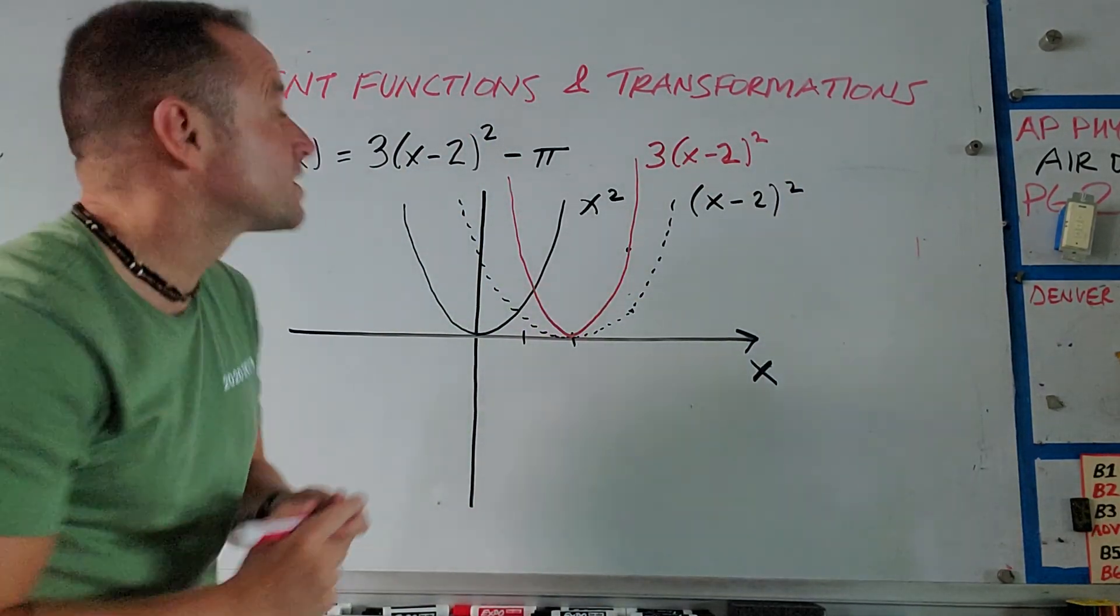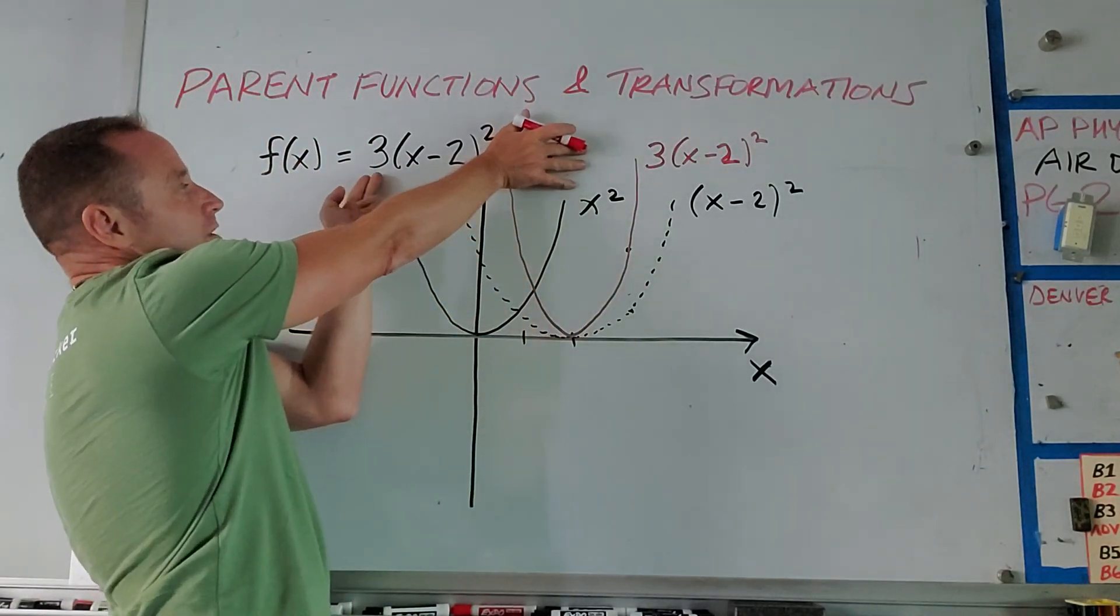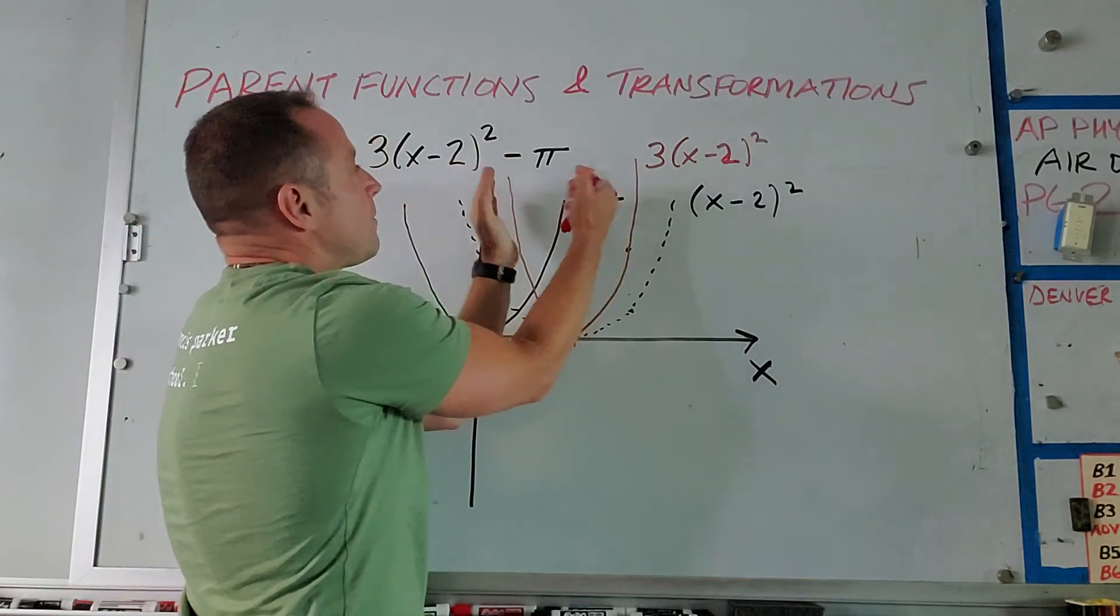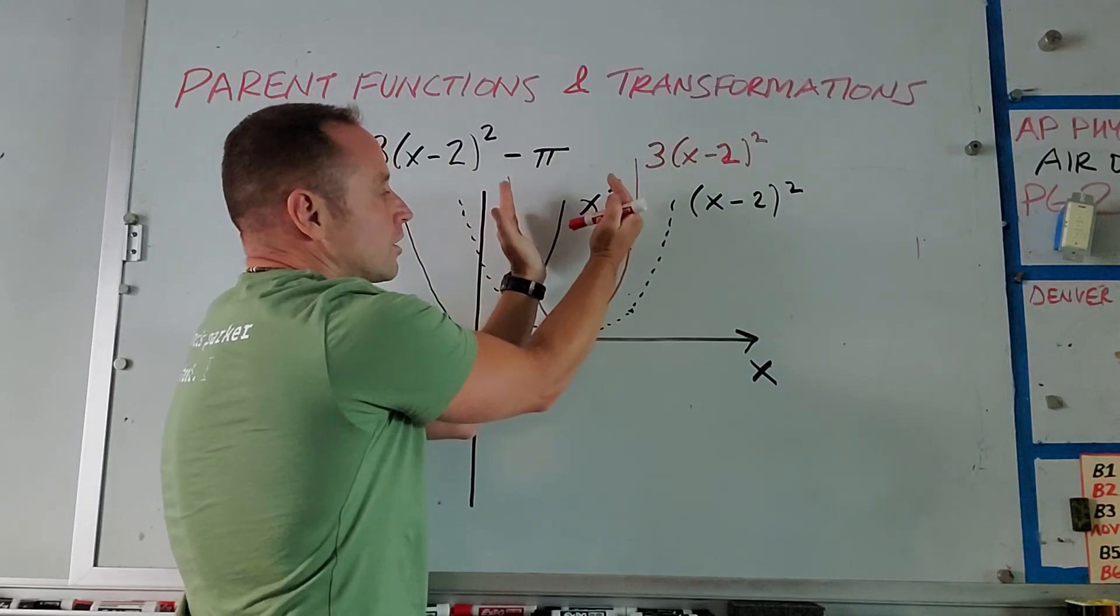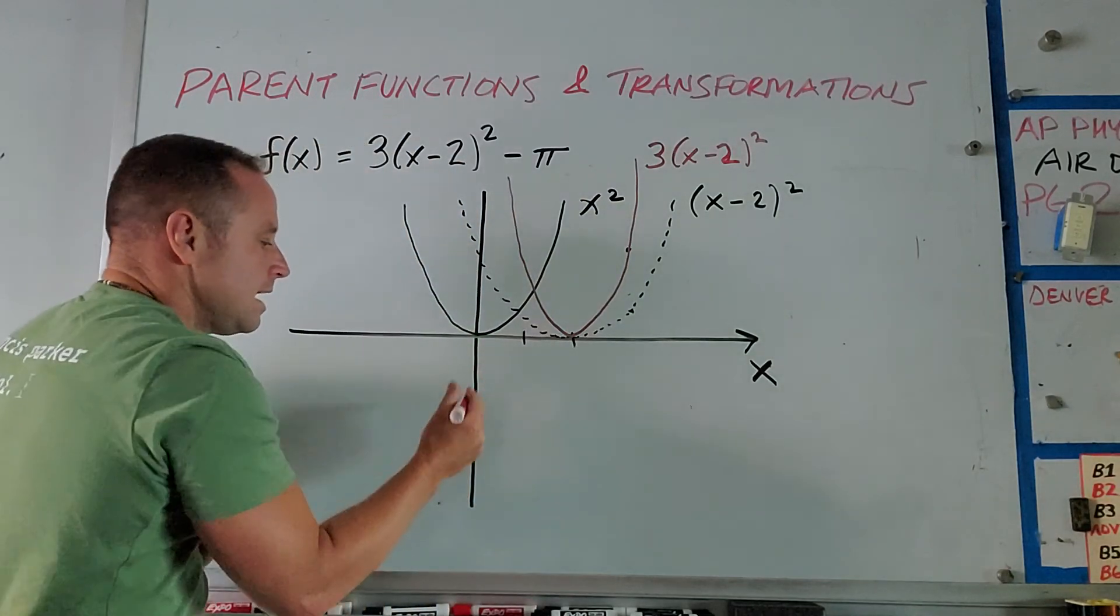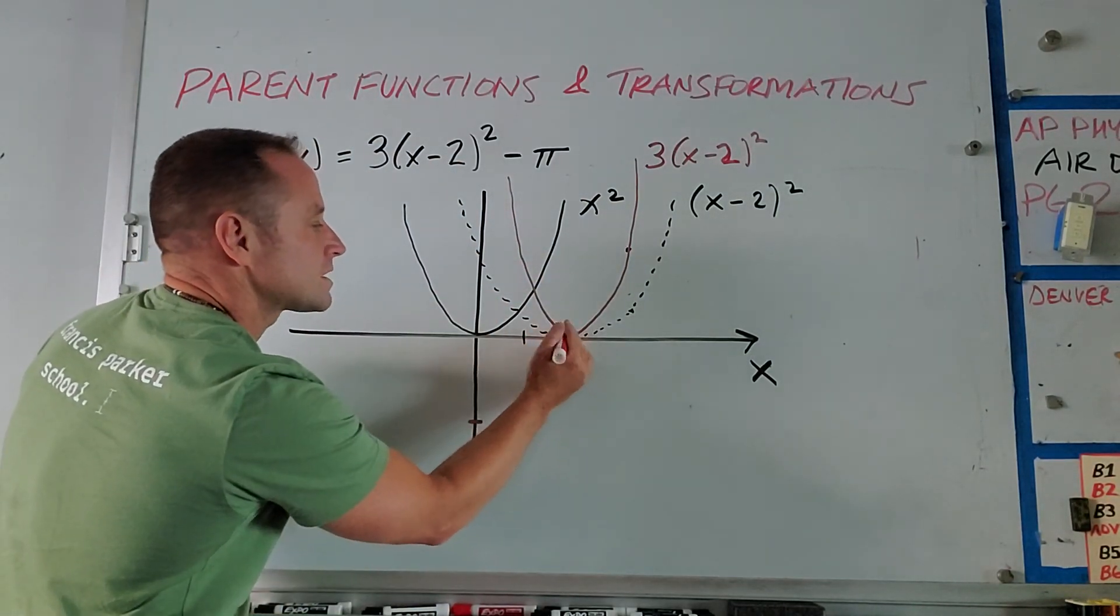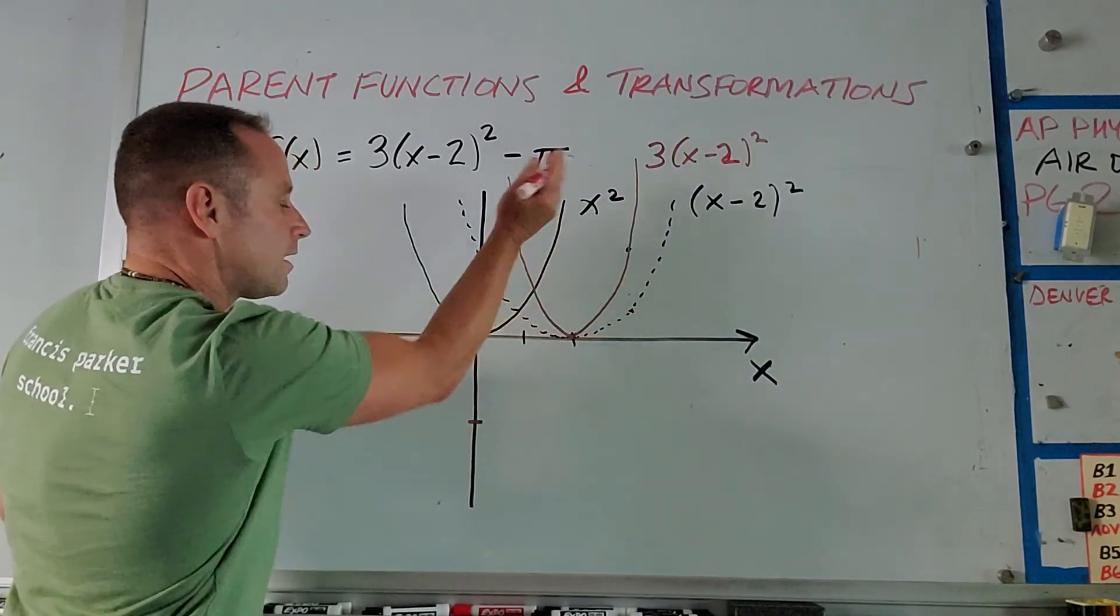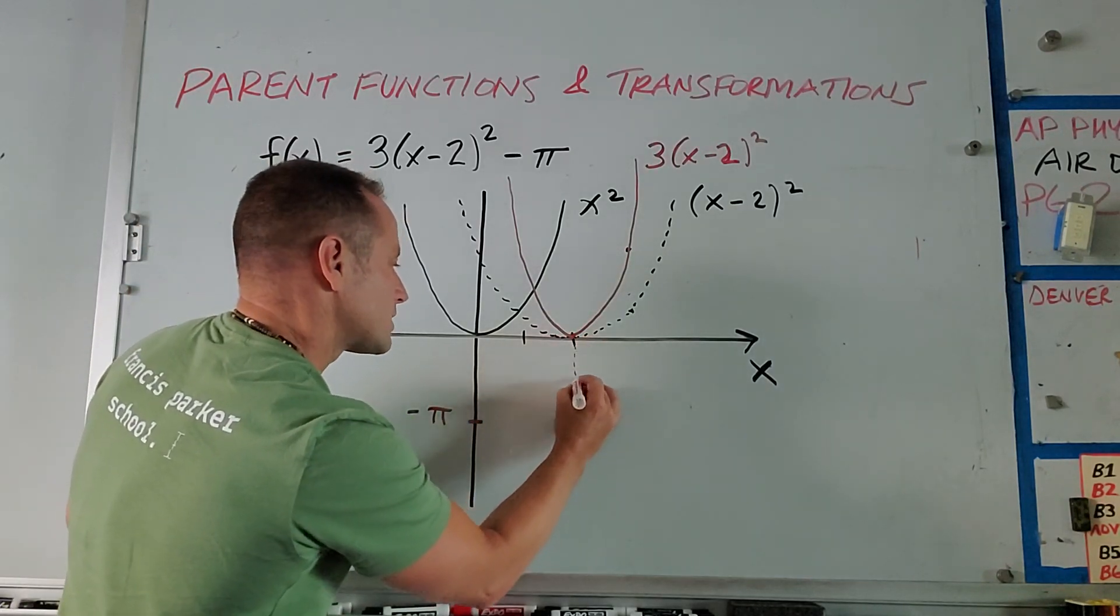So you can see that we're almost there. The very last thing that happens is we take whatever the output of this function is, 3x minus 2 quantity squared, and then we subtract pi. So everything in this red curve is just going to have pi subtracted from it. So we just need to shift it downward. And so finally, to wrap this up, instead of this vertex here being right here at y equals 0, we're going to shift it down to minus pi. And so we're just going to bring this guy down here.